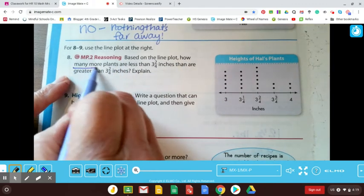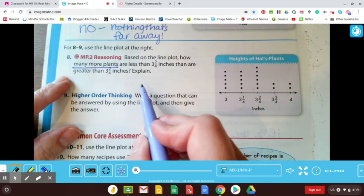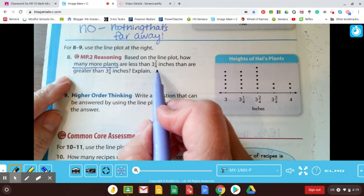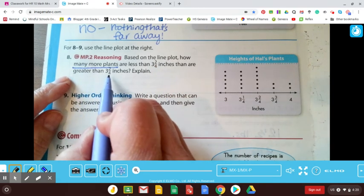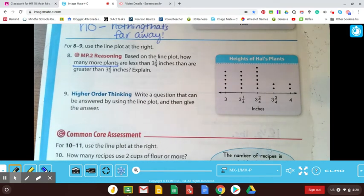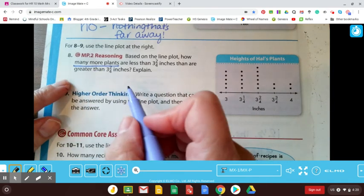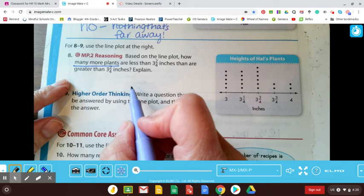So based on the line plot, how many more plants are less than three and two fourths inches than are greater than three and two fourths inches? Explain. All right. These kinds of questions can be tricky just based on the language that they're using. But if you go slow and reread, you're going to be like, oh, I get that.